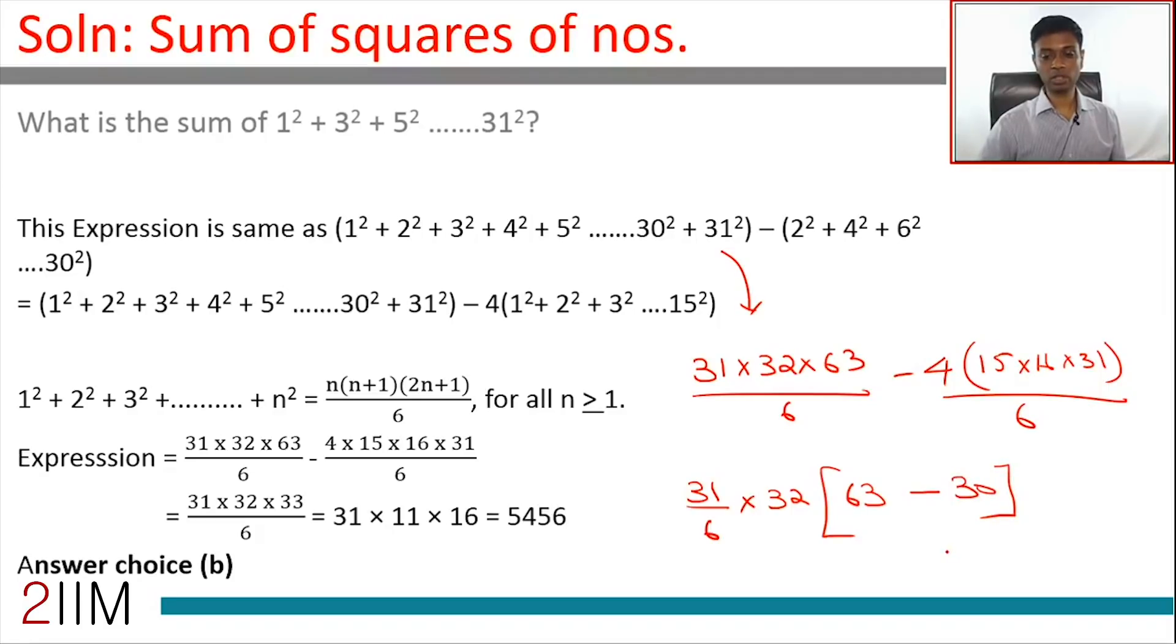31 × 32 × 33 / 6. We have 3 will become 16; 63 minus 30 is 33. You can cancel this—this becomes 11. So 16 × 11 is 176 times 31.